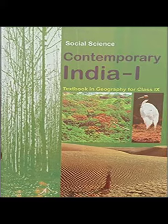Montane forests — in mountainous areas, the decrease in temperature with increasing altitude leads to a corresponding change in natural vegetation. There is a succession of natural vegetation belts in the same order as we see from the tropical to the tundra region. The wet-temperate type of forests are found between a height of 1,000 and 2,000 meters, where evergreen broad-leaf trees such as oaks and chestnuts predominate. Between 1,500 and 3,000 meters, temperate forests containing coniferous trees like pine, deodar, silver fir, spruce and cedar are found.